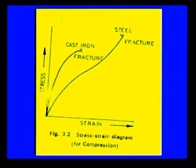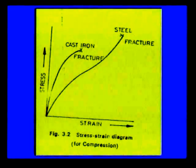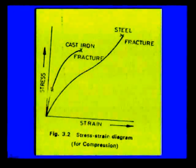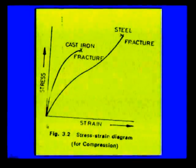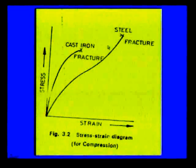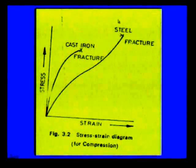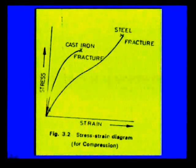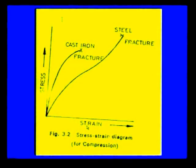The stress-strain diagram for compression for different materials like cast iron and steel shows that there is no yield point and no proportional limit — the material directly comes to the fracture state. That fracture is also a sudden one in the case of cast iron and in the case of steel. These are the graphs obtained between stress and strain when the specimen is subjected to compressive load.